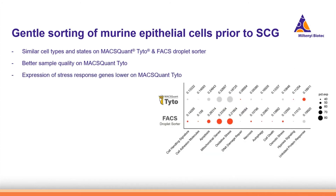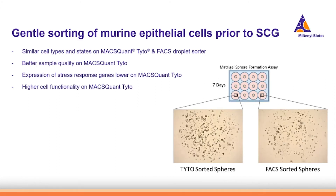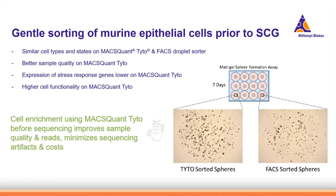He also looks at stress response gene expression and sees that the cells sorted from the MACSQuant Tyto had a lower expression of stress response genes. Finally, he performs a sphere assay and observes that the cells sorted with the MACSQuant Tyto form bigger and more spheres in culture, indicating a higher cell functionality. All in all, cell enrichment using the MACSQuant Tyto before sequencing improves sample quality and reads while minimizing sequencing artifacts and costs.